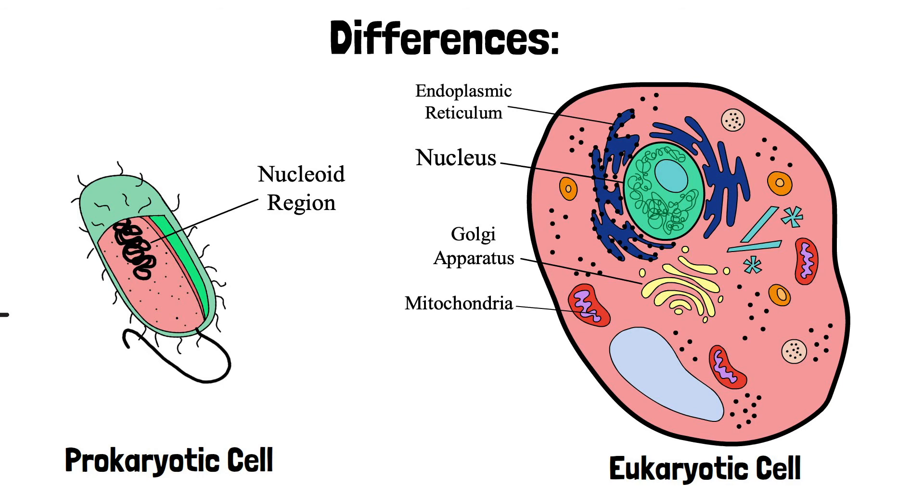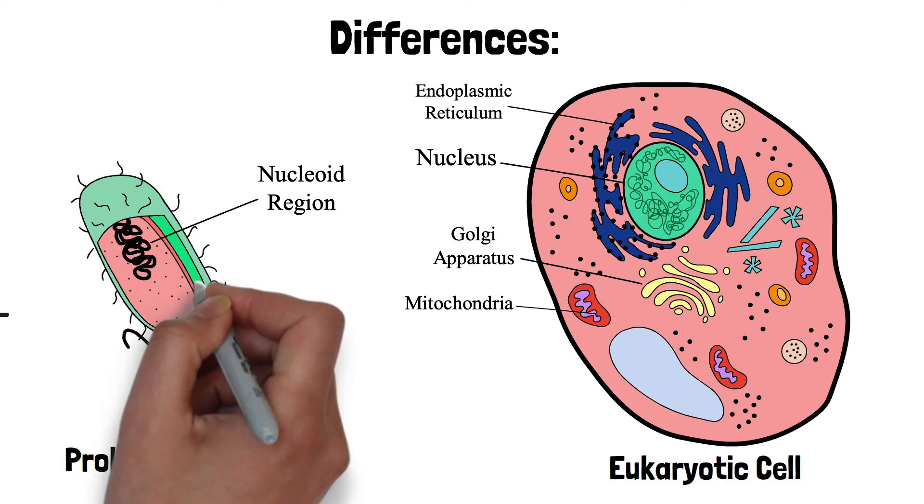Another important difference is the DNA structure. Eukaryotic DNA is double-stranded linear DNA, while that of prokaryotes is double-stranded and circular DNA.